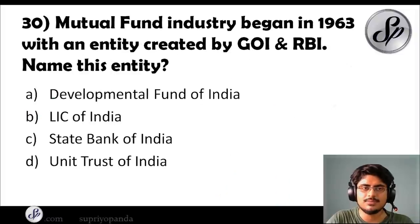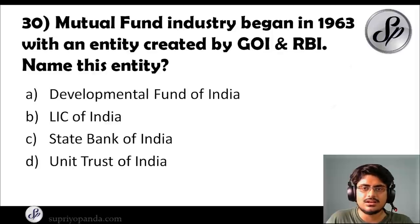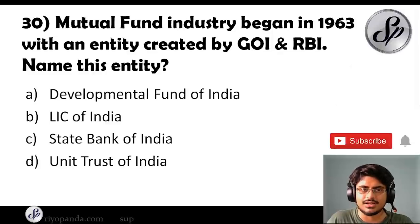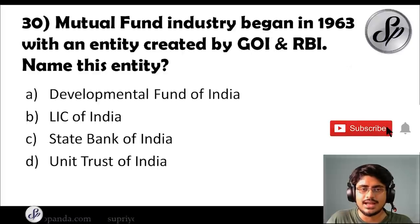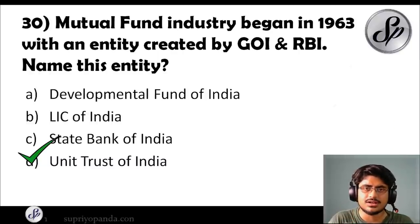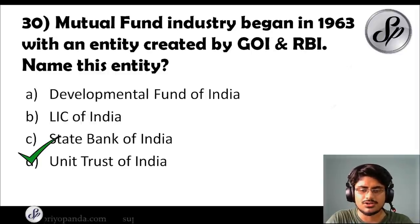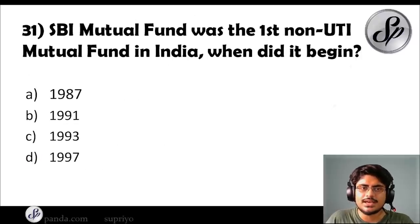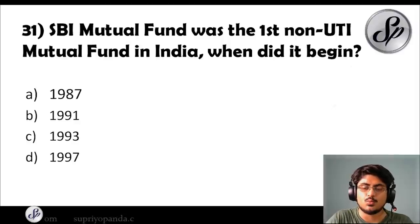Question thirty: the mutual fund industry began in 1963 with an entity created by the Government of India and RBI. What was the name of this entity? The answer is Unit Trust of India (UTI) — the first organization that began the mutual fund industry in India. Question thirty-one: SBI Mutual Fund was the first non-UTI mutual fund in India. When did it begin? The answer is 1987.